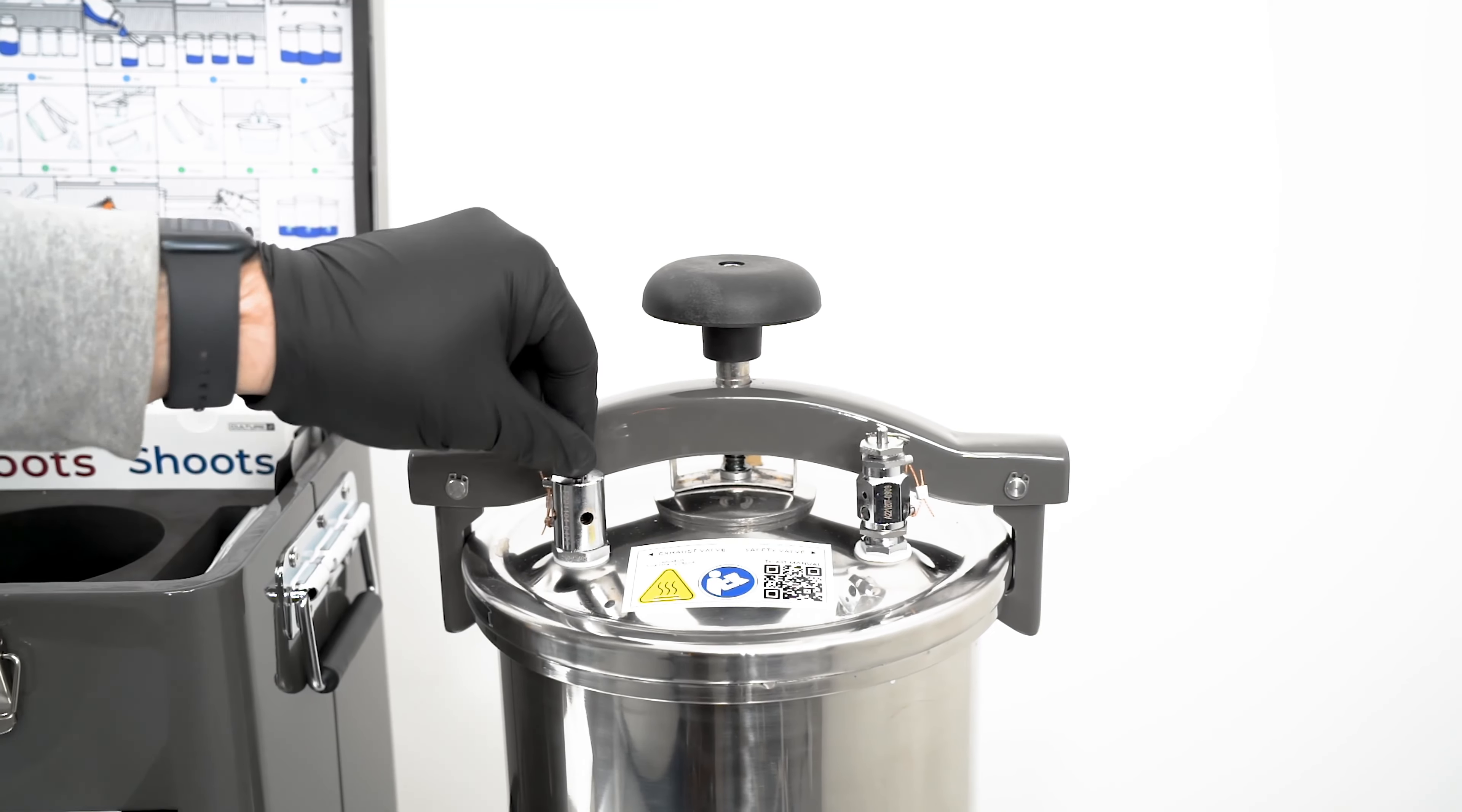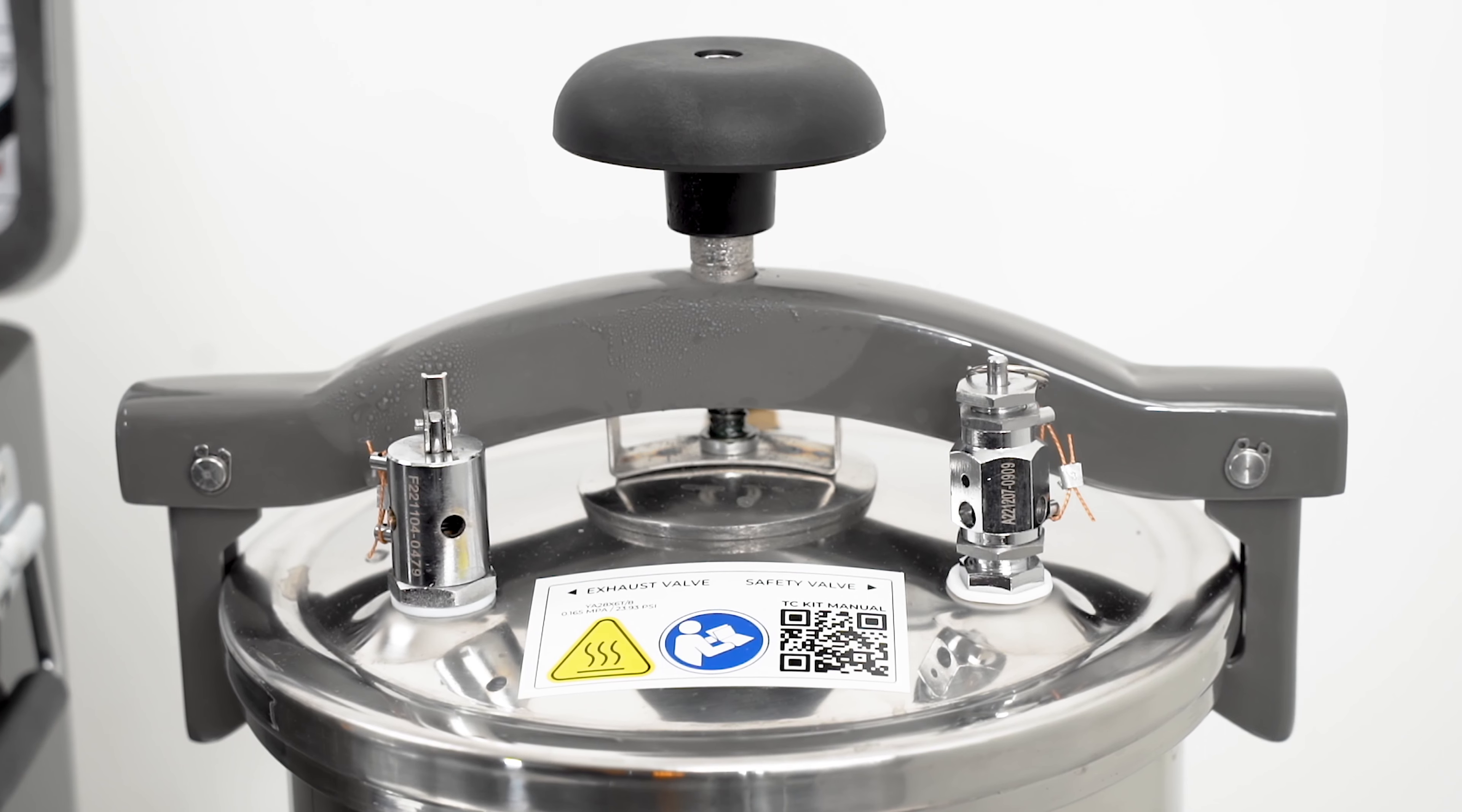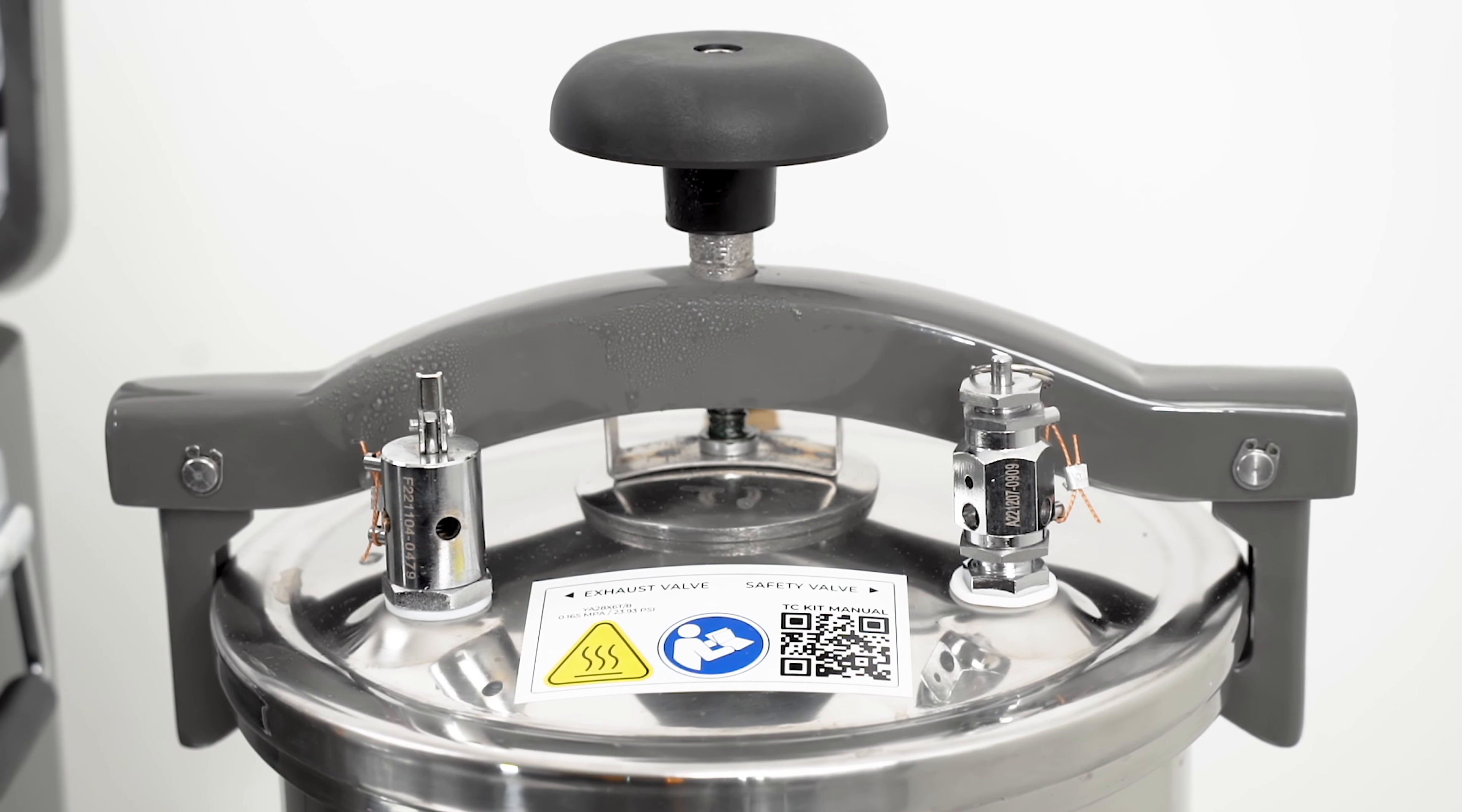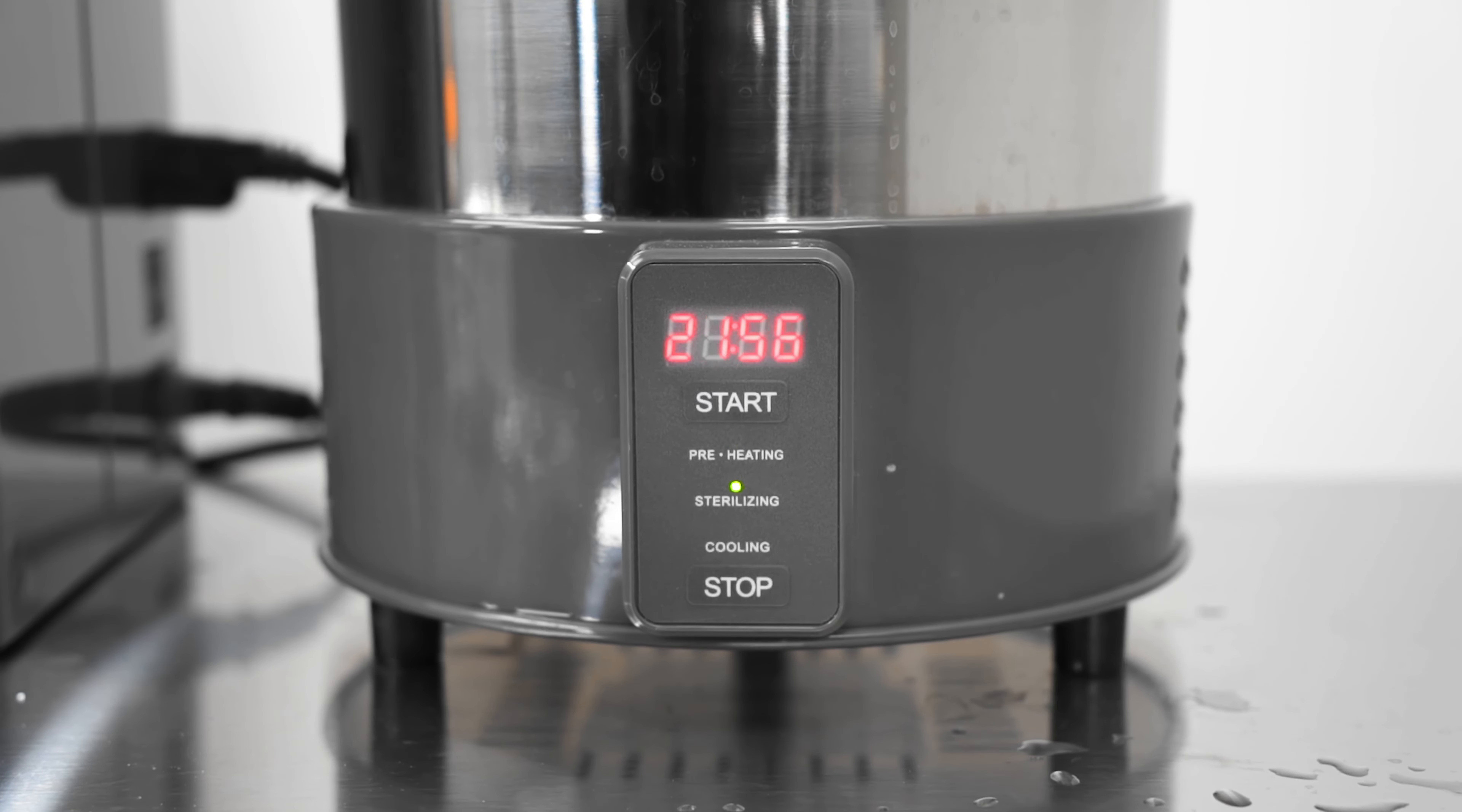Ensure the autoclave exhaust valve stays open after pushing start until the water begins to vaporize. This may take 8 to 10 minutes. When the vapor is seen coming from the exhaust valve, you can now close it. This allows for any contaminated air to escape the autoclave prior to being sealed for sterilization.